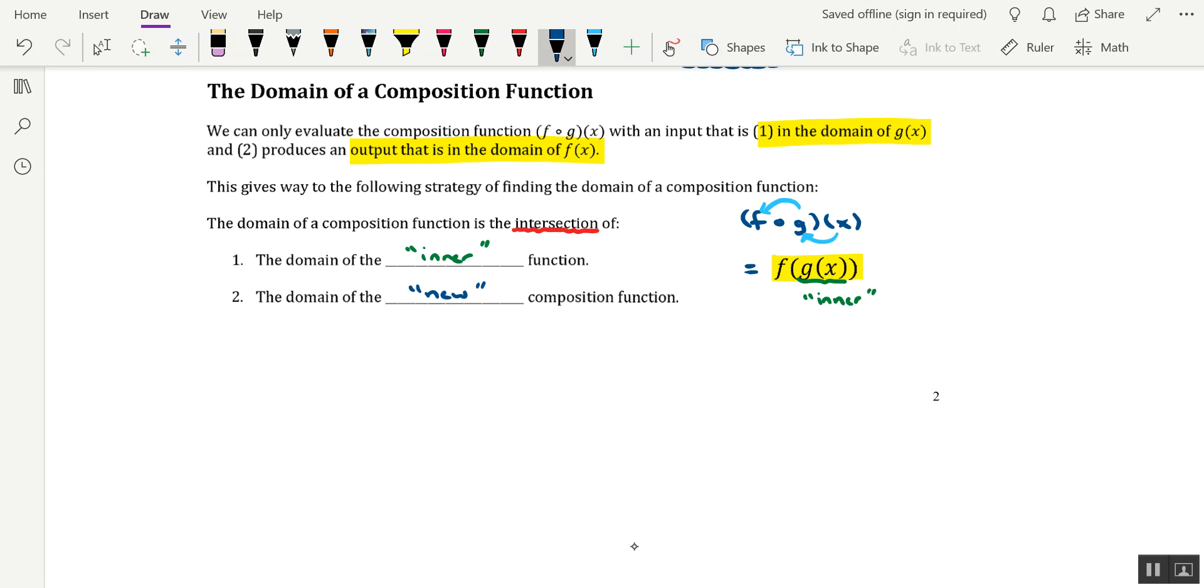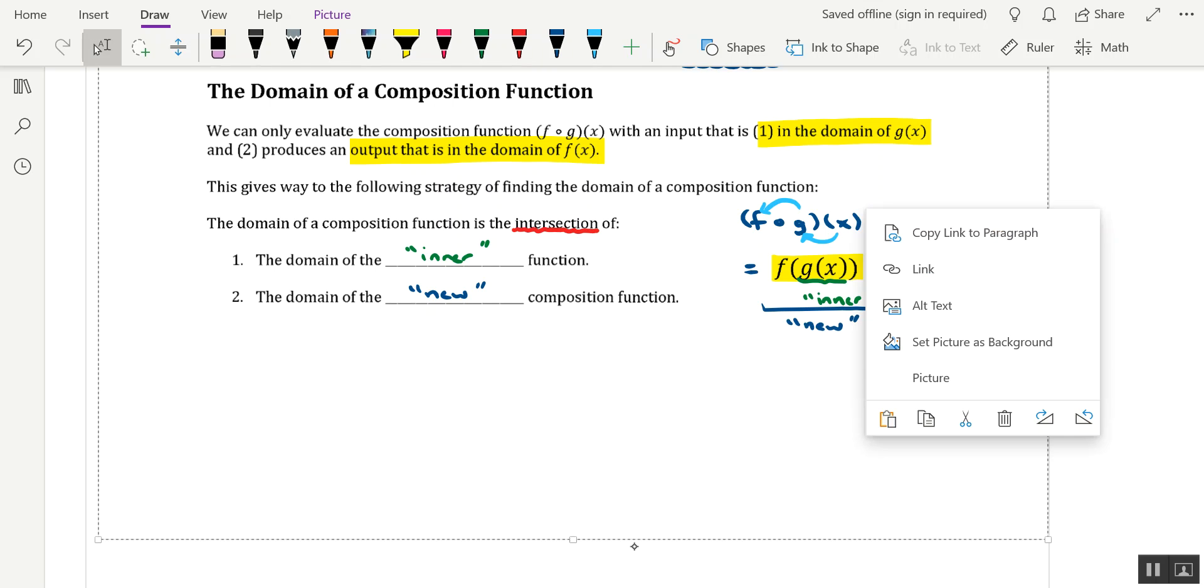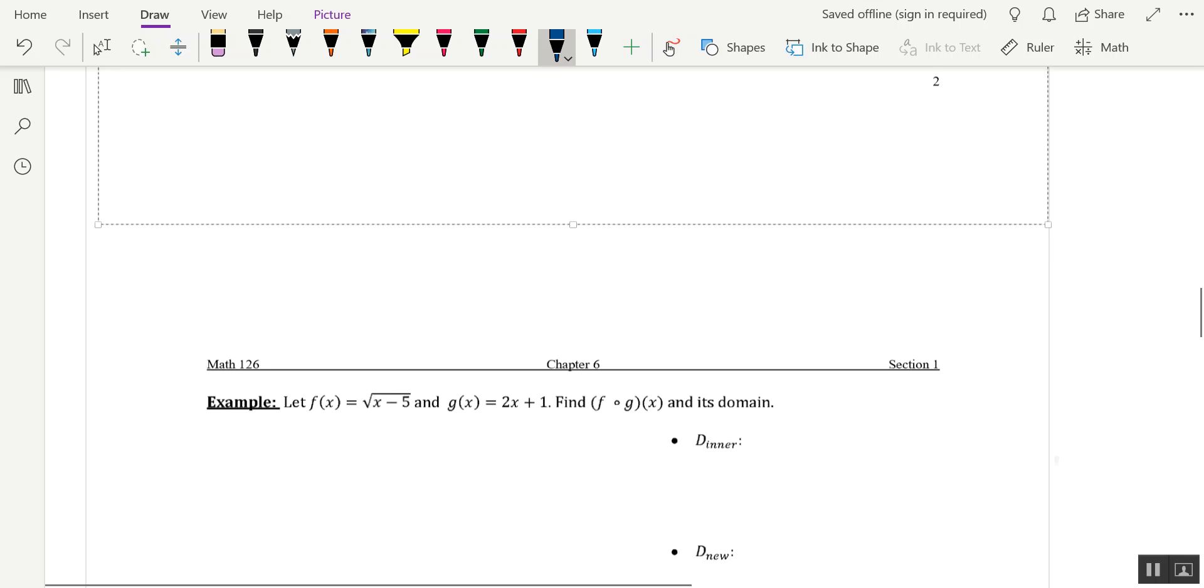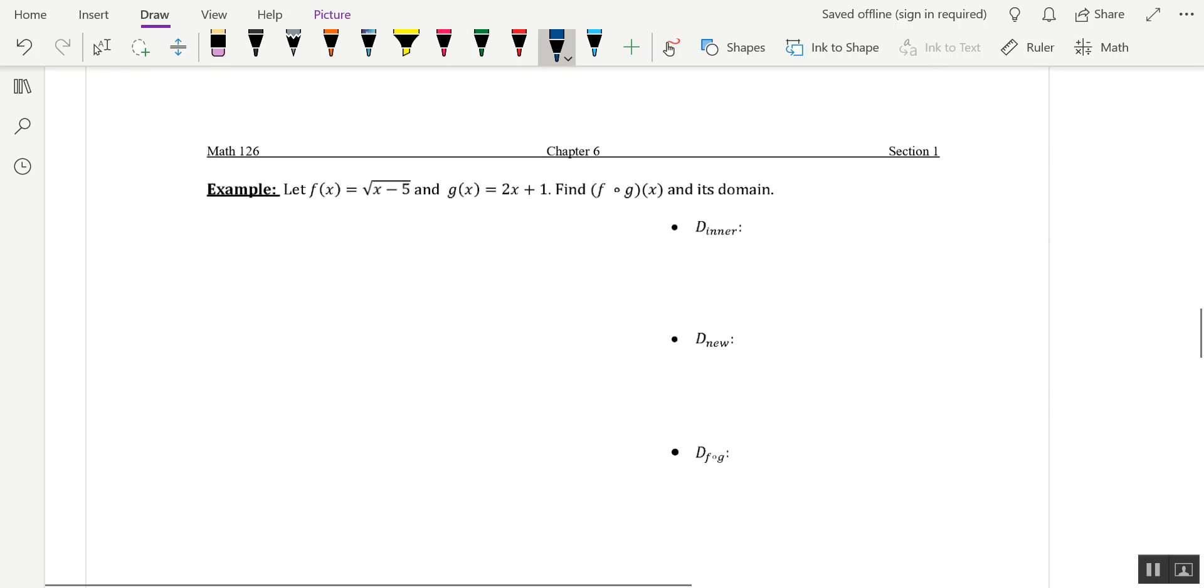And then we have to intersect that number line with the number line for the domain of the new composition function, which what I mean by the new function is the function that results from the operation of composition. So that would be the domain of basically the end result of plugging g of x into f of x, because that's what I refer to as my new function. So with that, I'd like to do an example.